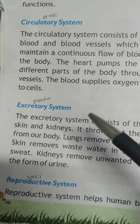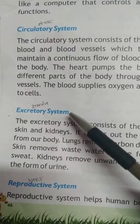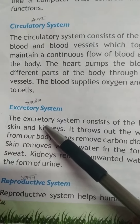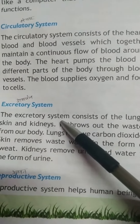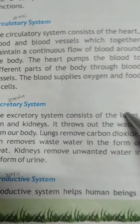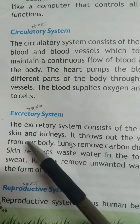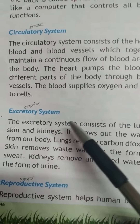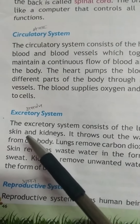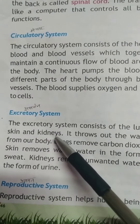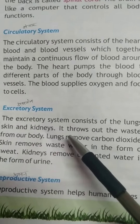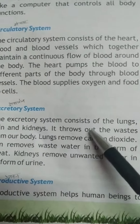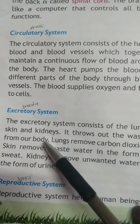Let's start excretory system — یعنی کہ اخراجی تنتر. The excretory system consists of the lungs, skin, and kidneys. It throws out the waste from our body.